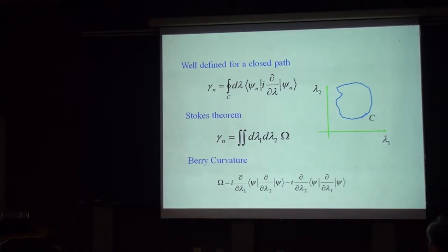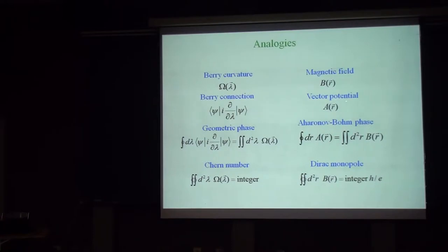This Berry phase can be written as a line integral of a vector. It looks like a vector in our electromagnetism. Then, you can use Stokes theorem, it looks like a flux. And this quantity called a gauge field is called Berry curvature. It can be written like that. And this Berry curvature exactly looks like a magnetic field in real space. So you can see that the Berry curvature is like magnetic field, Berry connection is like vector potential, and this Chern number equivalent to Dirac monopole, which people are still looking for.